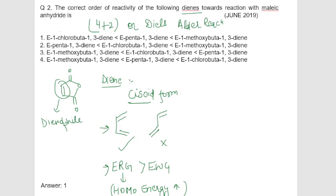Let's start the solution. Here are three compounds, or three dienes: E-1-chlorobuta-1,3-diene, E-penta-1,3-diene, and E-1-methoxybuta-1,3-diene. So let's draw their structures first, then we will decide the order.